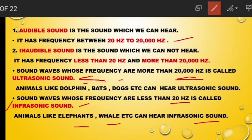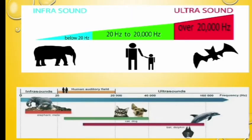Ultrasound is above 20,000 hertz and infrasound is below 20 hertz. You can see the diagram given here — infrasound is below 20 hertz, ultrasound is above 20,000 hertz. Infrasound can be heard by elephants, and ultrasound is produced by musical instruments. The green band shows the audible frequency range of 20 hertz to 20,000 hertz, which is audible to the human ear.